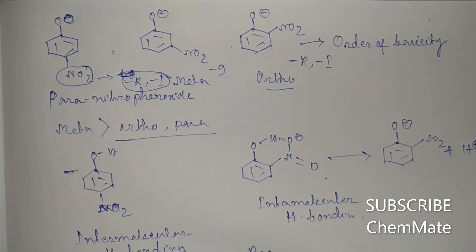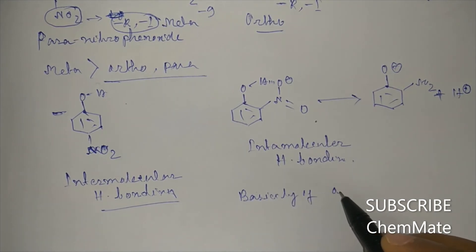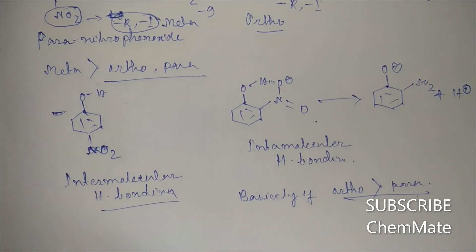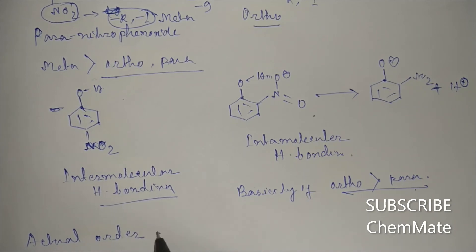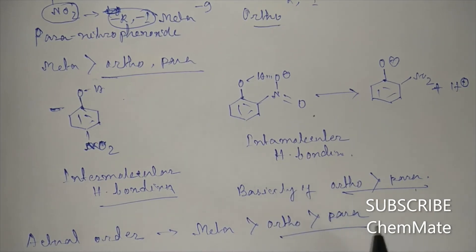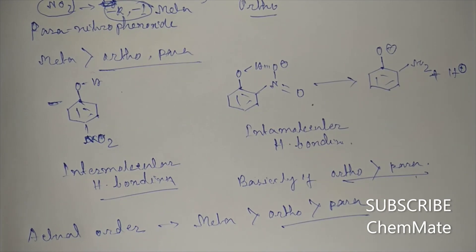So the basicity of ortho nitrophenol's conjugate base is greater than para. The actual order will be: meta greater than ortho greater than para. Guys, if you have any doubt regarding this video please let me know in the comment box. To get such interesting videos, subscribe to my channel. Thank you, have a good day!